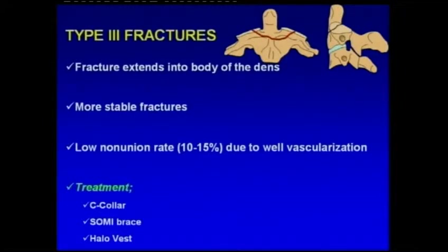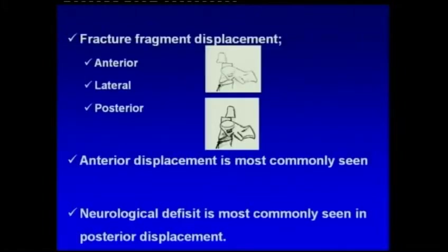Type 3 fractures are more stable fractures with a low non-union rate due to well vascularization. Conservative treatment is generally acceptable in type 3 fractures. Fracture fragment displacement can be anterior, lateral, or posterior. Anterior displacement is most commonly seen, while neurological deficit is most commonly seen in posterior displacement.